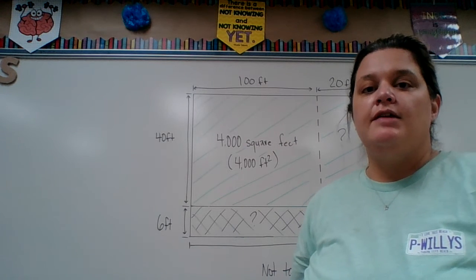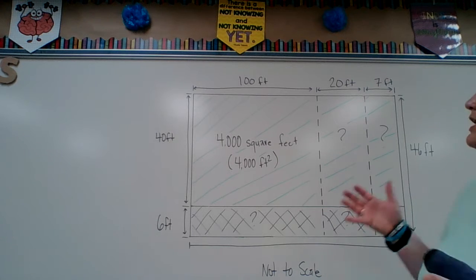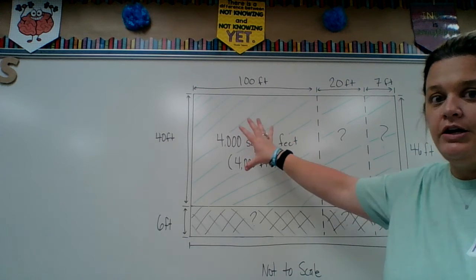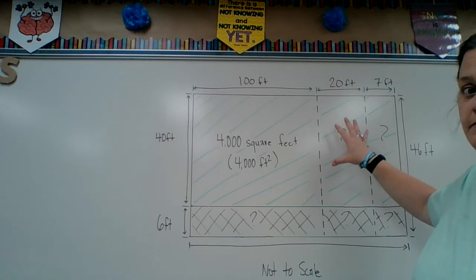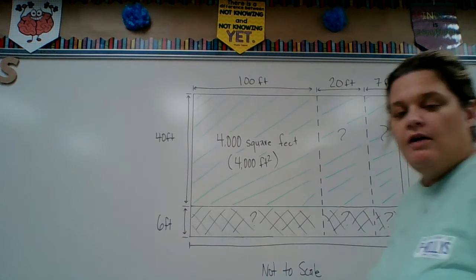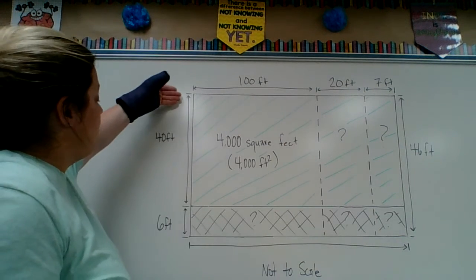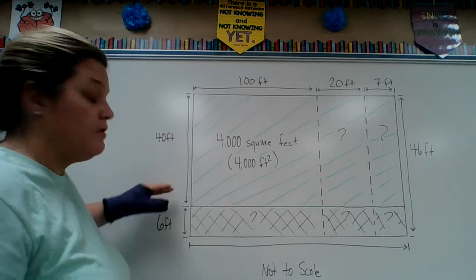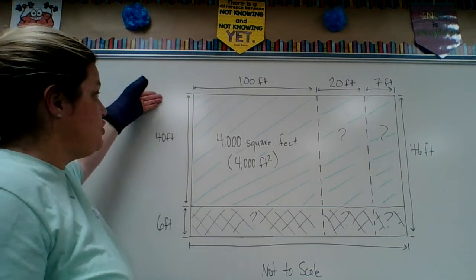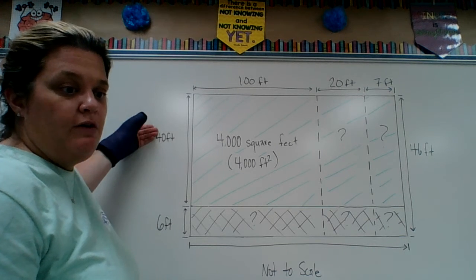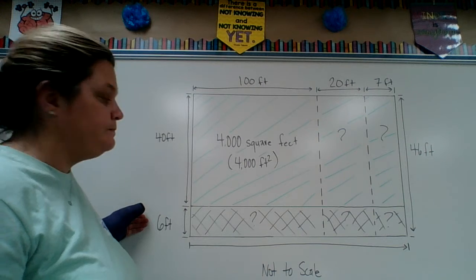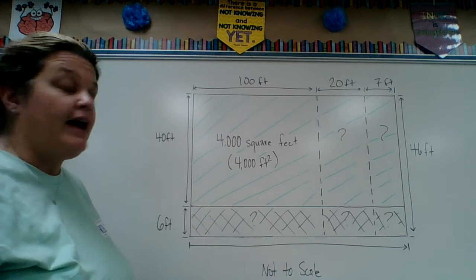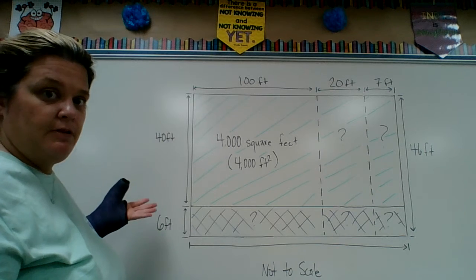So basically this mall is designing a space outside, and this is the area they have been given. This is green — the grassy section — and this is the sidewalk. From this point to this point is 40 feet of green. From this point to this point is 6 feet — that's your width. It is 40 feet wide and then 6 feet wide. If you look on the opposite side, you have a total of 46 feet going from top to bottom. How did they get that? Well, 40 plus 6.